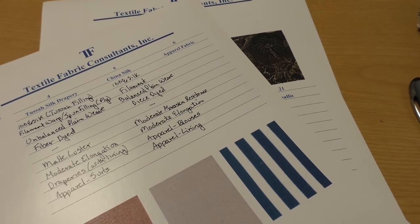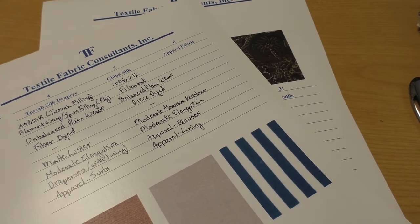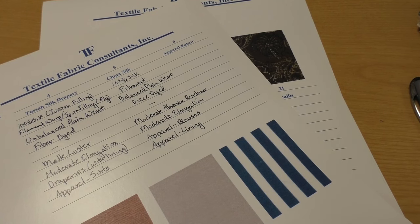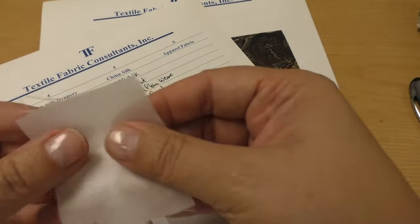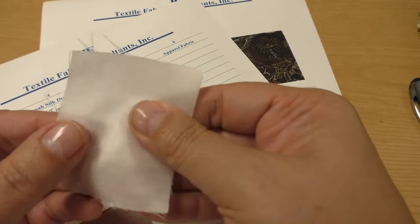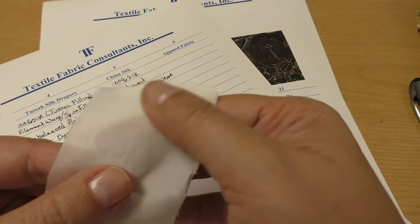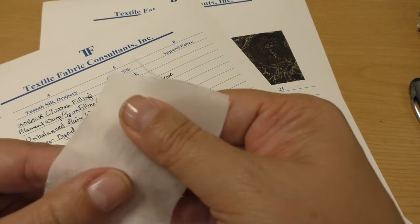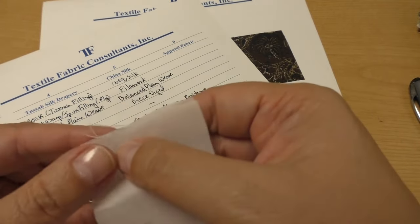So here is the china silk, which is as different as it could be from your Tassa silk. See how smooth that is? No 3D crimp on that swatch.